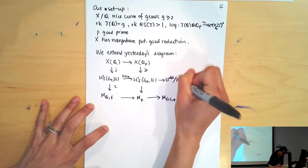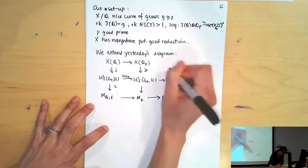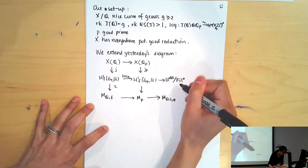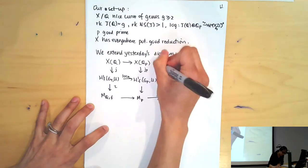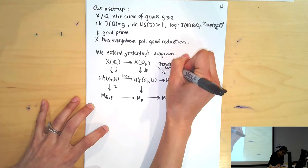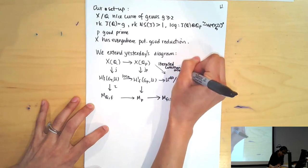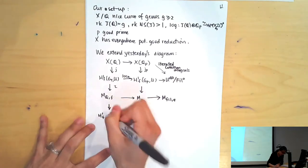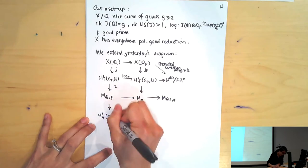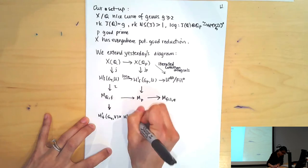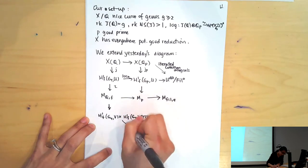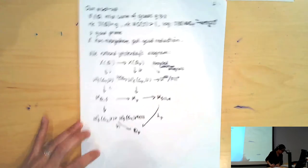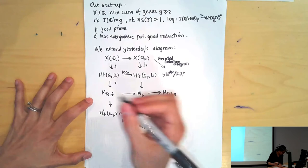Then we have our filtered phi modules here. We saw, also in Minhyong's lecture, the space U_Deram quotiented out by fil^0. This is a quotient of Deligne's de Rham pi_1. This map here is cut out by iterated integrals. Let me label this - this is tau_p.